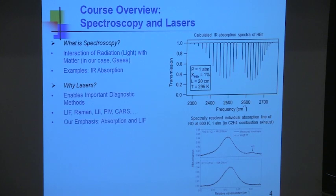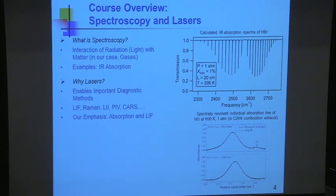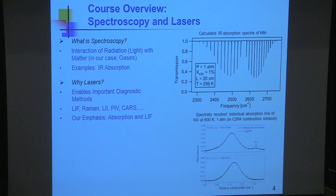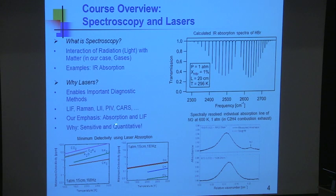Why would we want to use lasers? The virtue of the laser is that it enables diagnostic methods. Because they're monochromatic, coherent light, you can propagate the light in a tight focused beam, and because it's monochromatic, we can simplify the physics. This might be used for fluorescence, Raman, laser-induced incandescence, particle imaging, velocimetry, CARS, and so on. But I'm going to focus on just two examples, known as linear methods. Linear methods are simpler to interpret and to learn from.